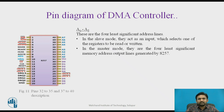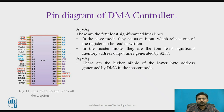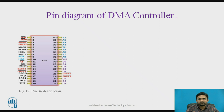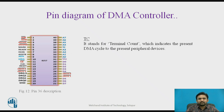The address lines A0 to A3 are the four least significant address lines. In the slave mode, they act as inputs which select one of the registers to be read or written. In the master mode, they are the four least significant memory address output lines generated by 8257. The next higher nibble, A4 to A7, are the higher nibble of the lower byte address generated by DMA only in the master mode. The last pin, TC at pin 36, stands for terminal count, which indicates the end of the present DMA cycle to the peripheral devices.